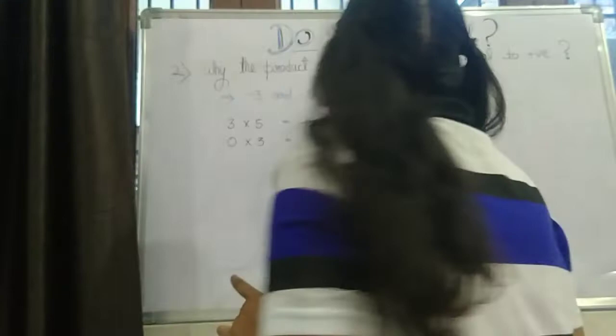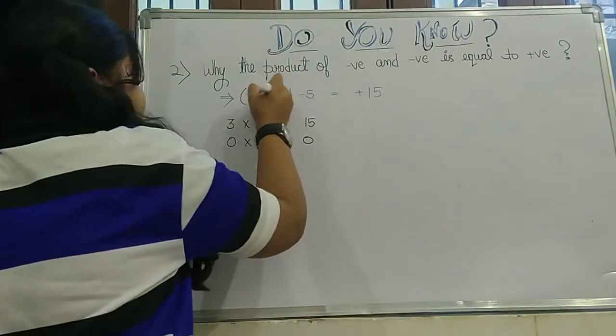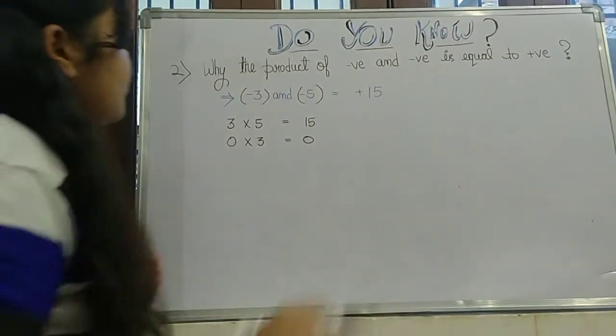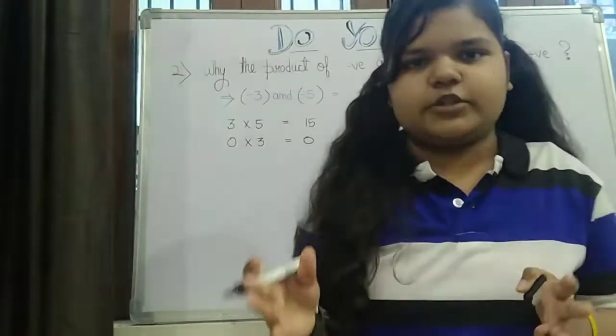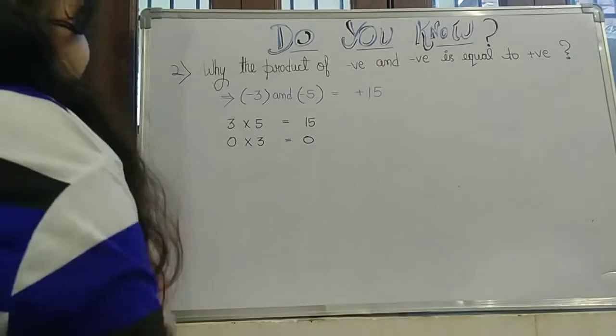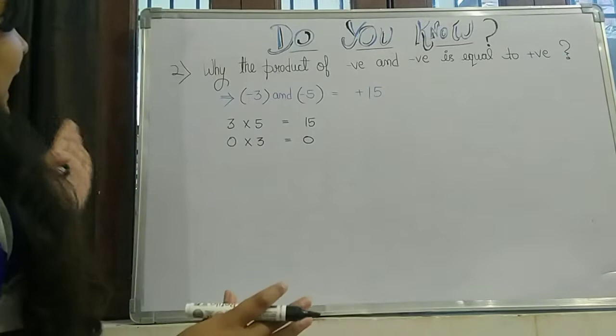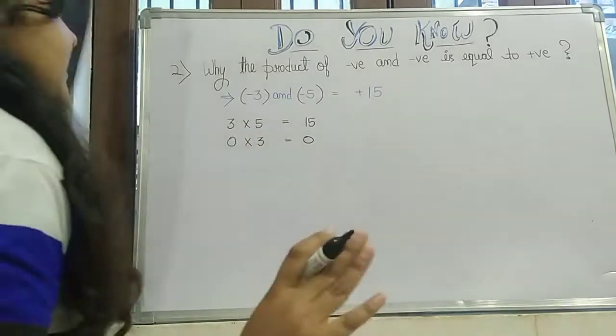So before we understand about minus 3 and minus 5, we will understand about 5 and minus 3 product. Clear? So 0 into 3 is equal to 0. Anything multiplied by 0 is always equal to 0. And 3 into 5 is 15. This thing is clear.